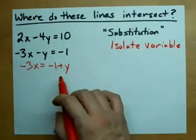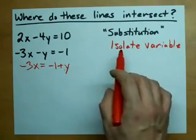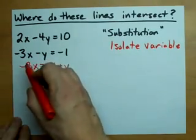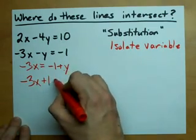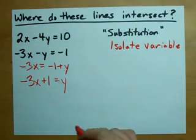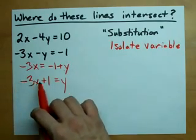Now I want Y on its own because I'm isolating my variable, so I move my negative 1 to the other side. Don't forget to flip the sign. And it turns out Y equals negative 3X plus 1.